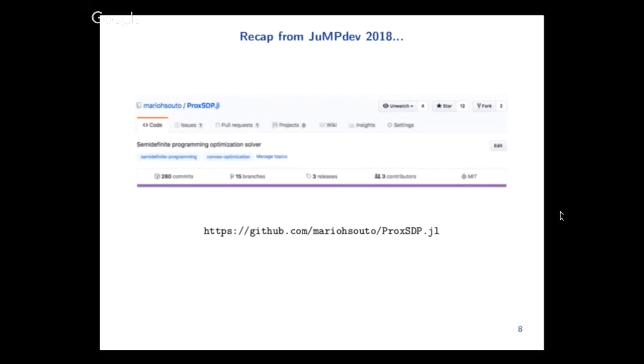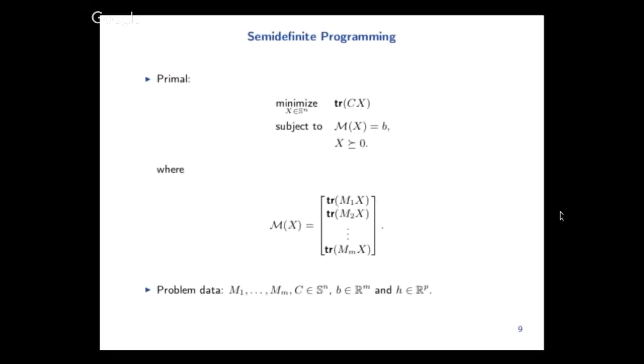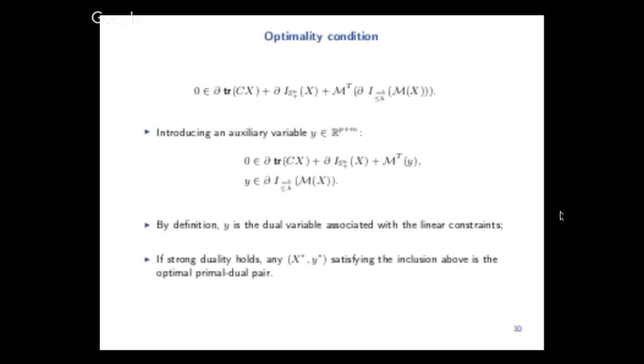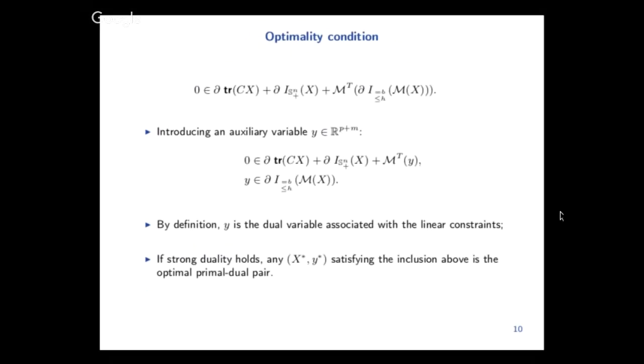What we did is that we developed this solver entirely done in Julia which is called ProxSDP. Here you have what a semidefinite programming problem is, which is basically an LP but instead of having the non-negative orthant here, you have the positive semidefinite cone, and you can do a lot more things with this. You can write the automatic condition for this problem as this system here, and then you can rewrite this using the dual variables W here.